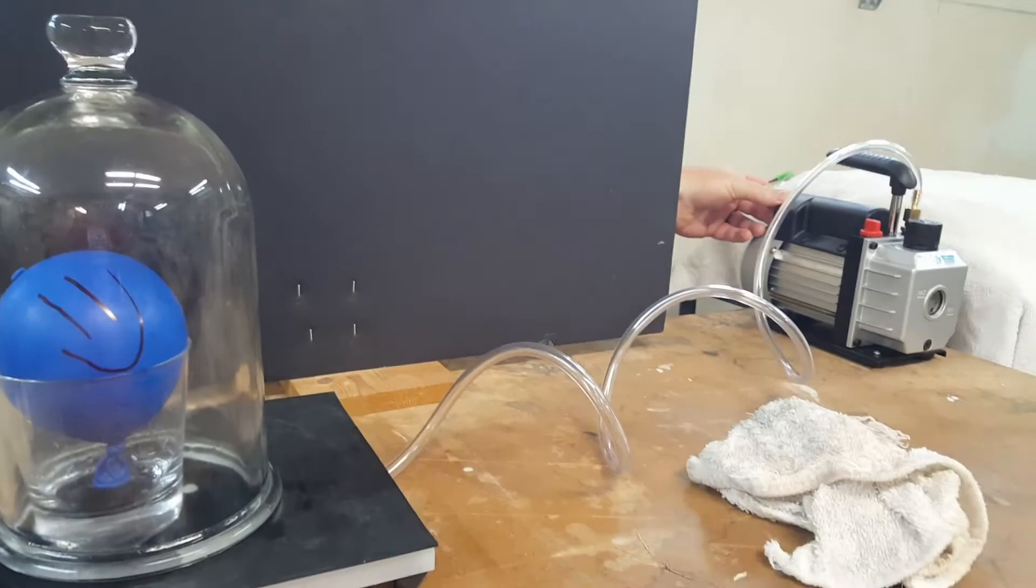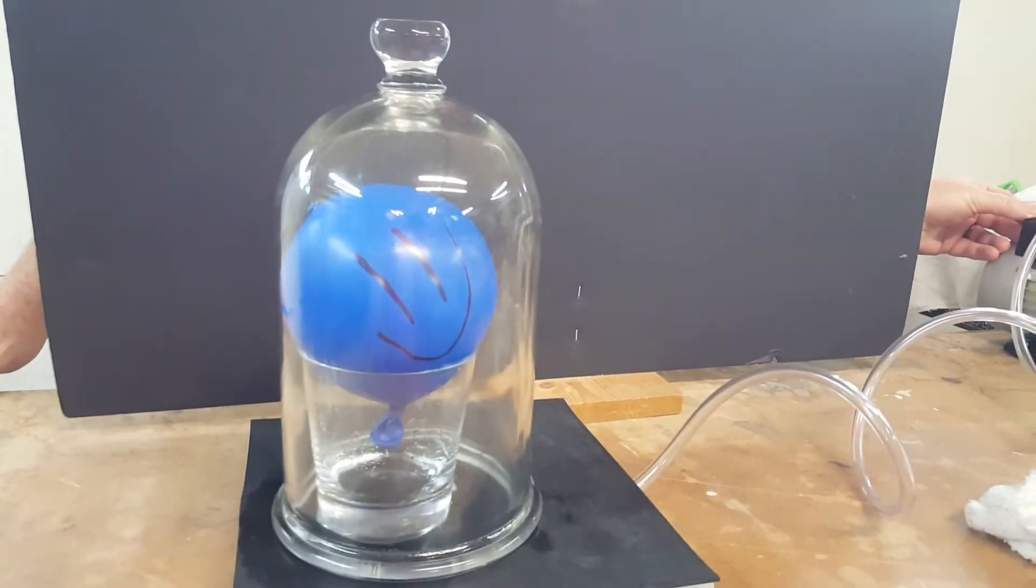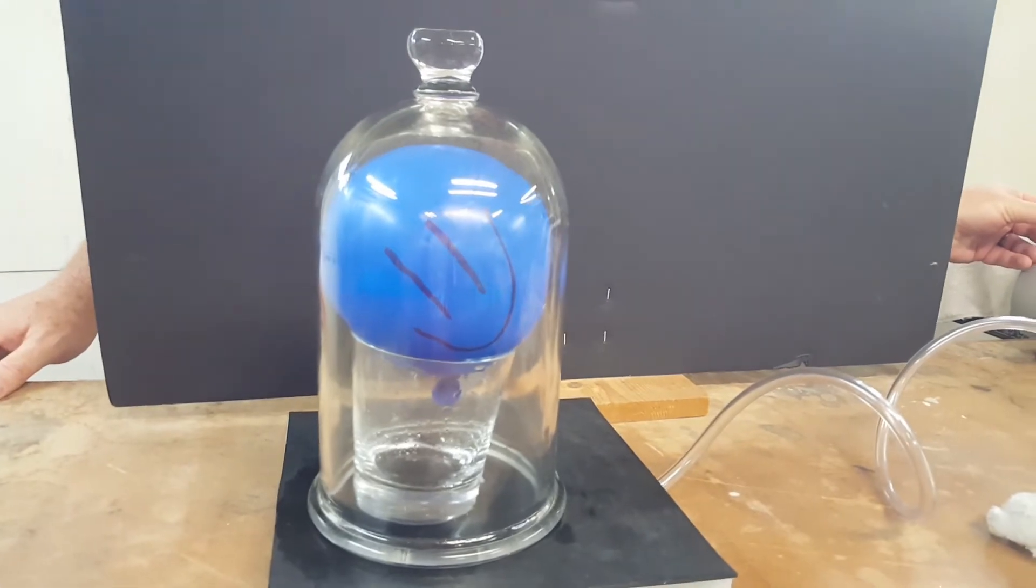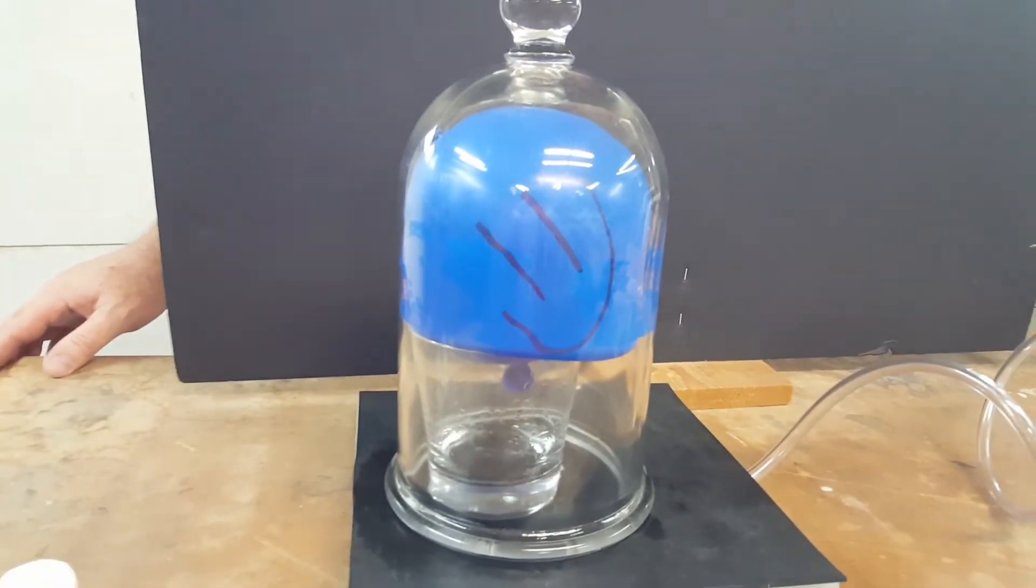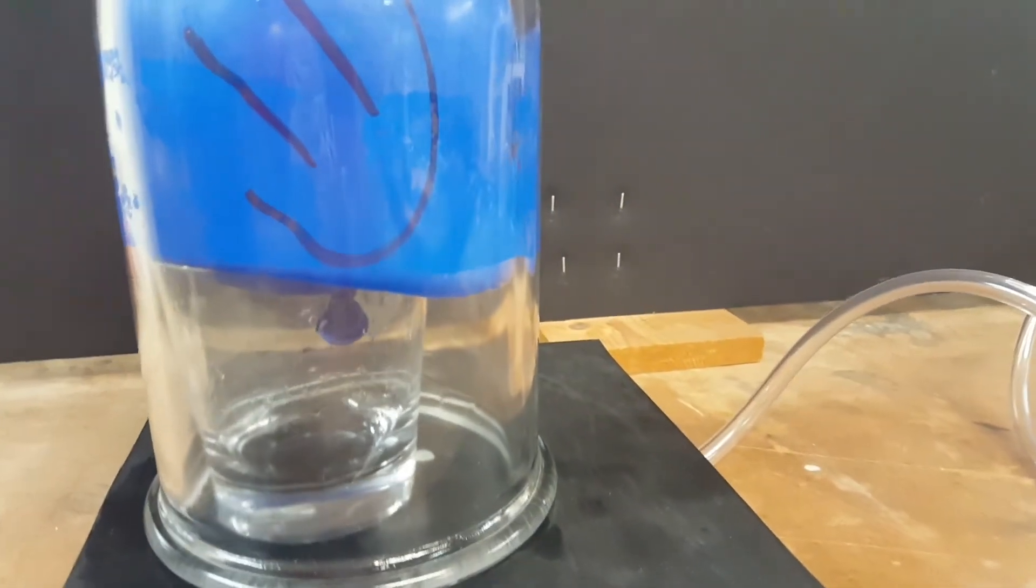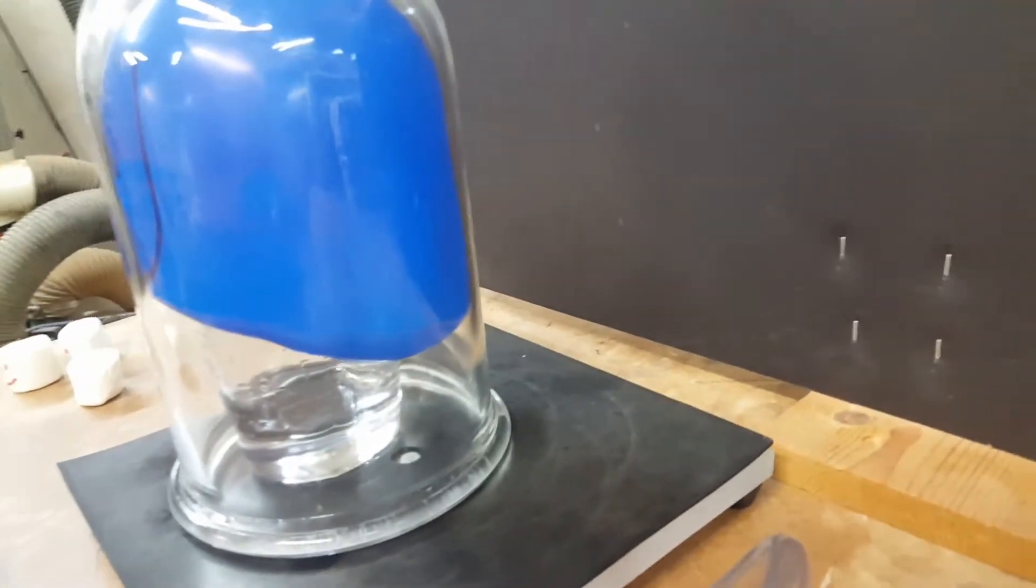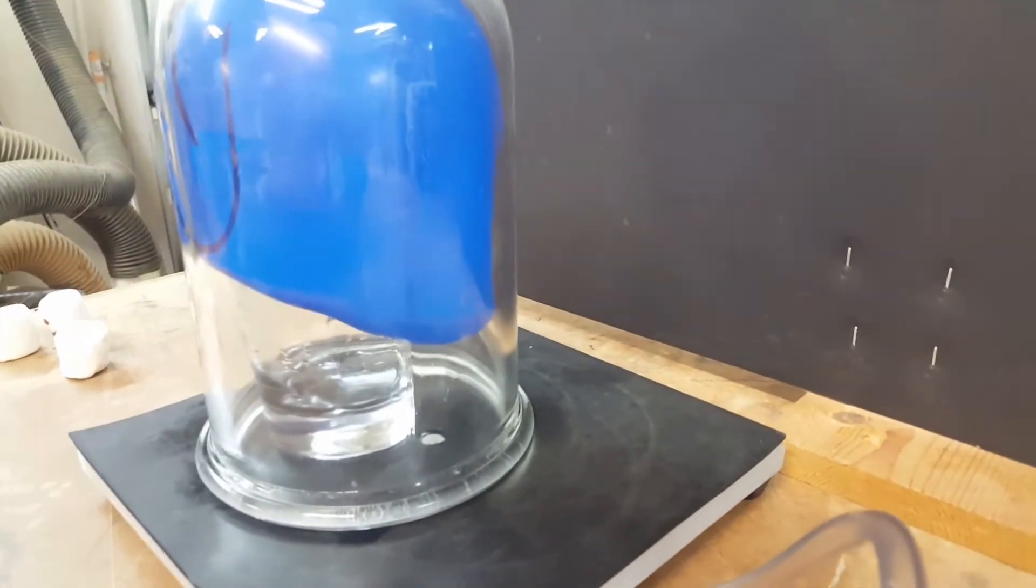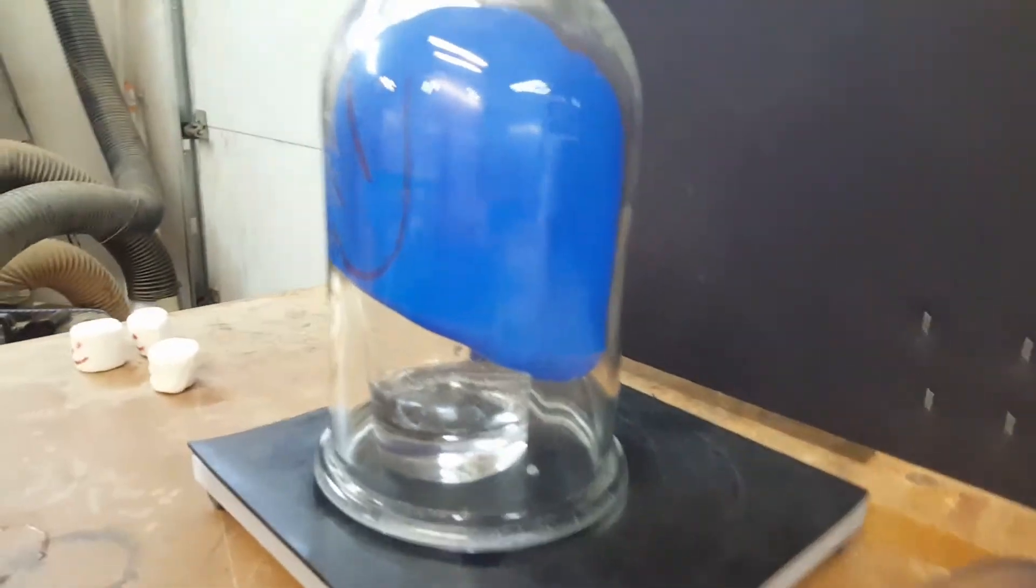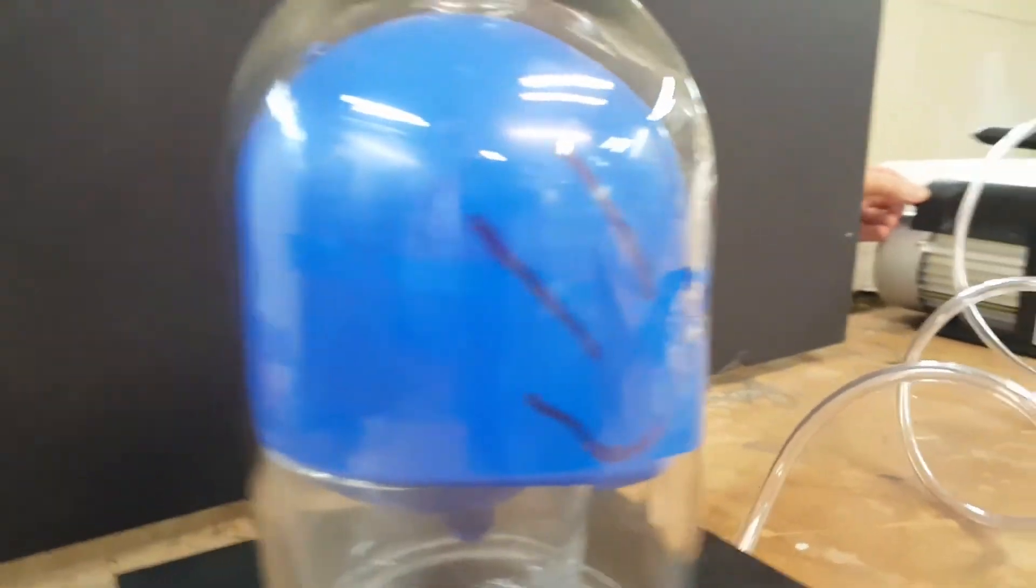So we'll start the vacuum pump again. You get a really, really creepy looking blob-like balloon. It starts flowing down the side. Any of you early science fiction fans will recognize a movie called The Blob. So what we're doing is removing the pressure from around this balloon. The 14 pounds per square inch that's almost always there. And the air in the balloon is expanding.